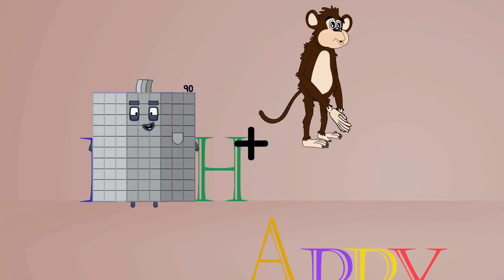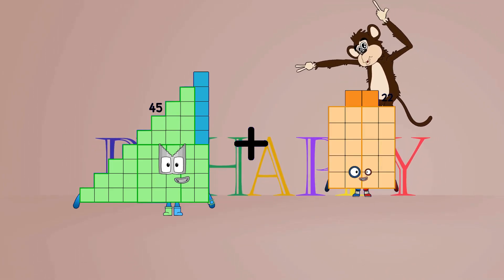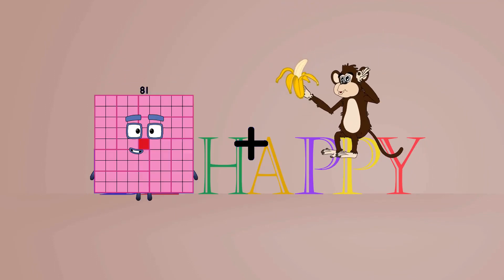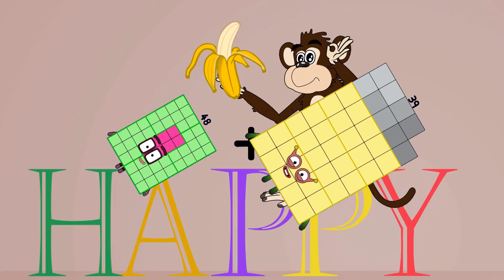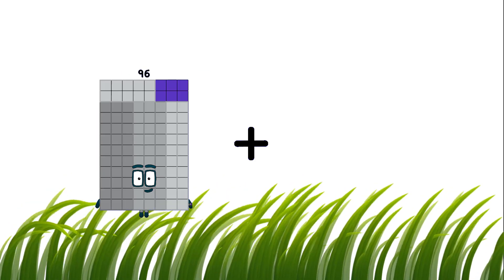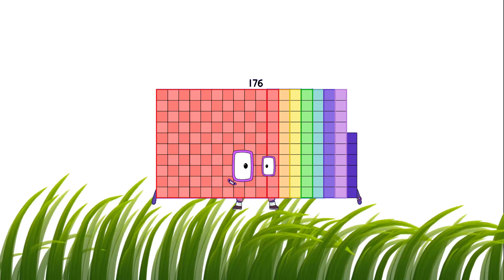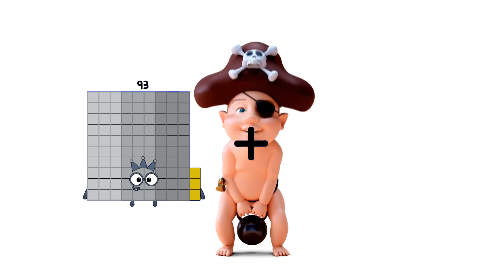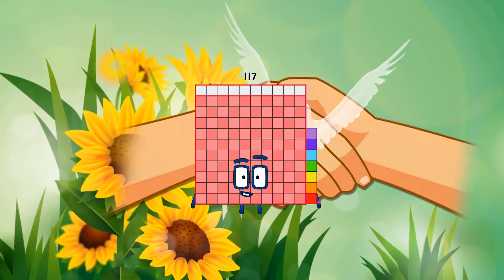45 plus 22 equals 67. 48 plus 39 equals 87. 96 plus 80 equals 76. 93 plus 24 equals 117.